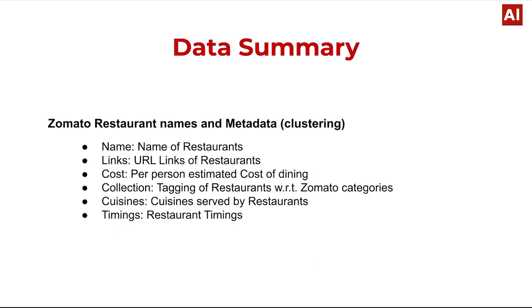Data summary — Zomato restaurant names and metadata: the dataset provides the name of the restaurant, a URL link to the restaurant, cost which is the estimated per-person cost of dining, collection tagging of the restaurant with respect to Zomato categories, cuisines, and dishes served by restaurants, along with restaurant timing.